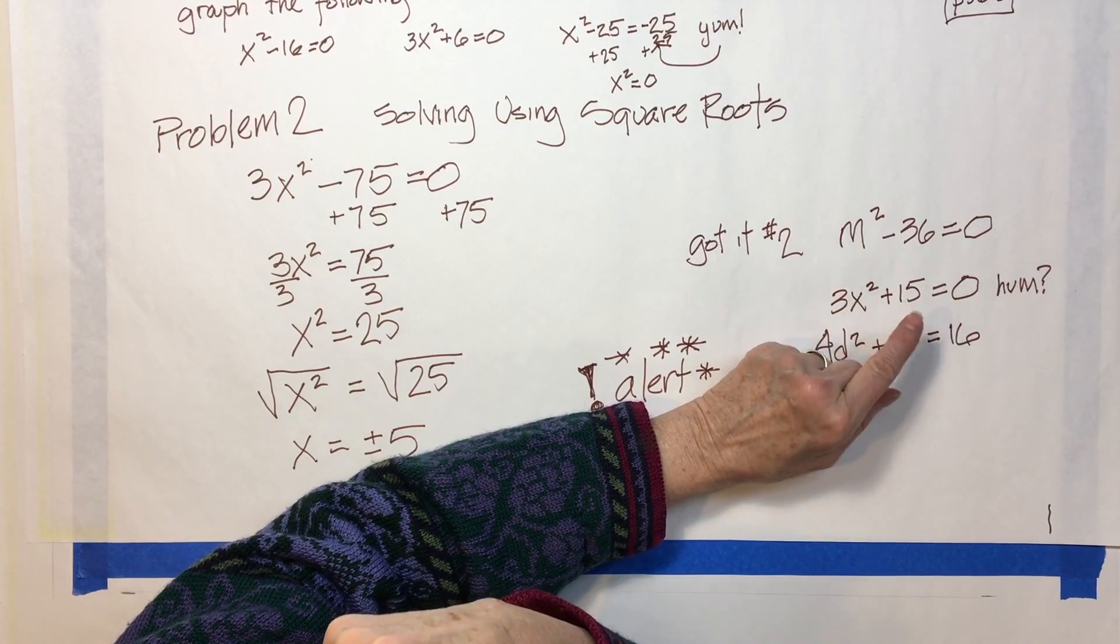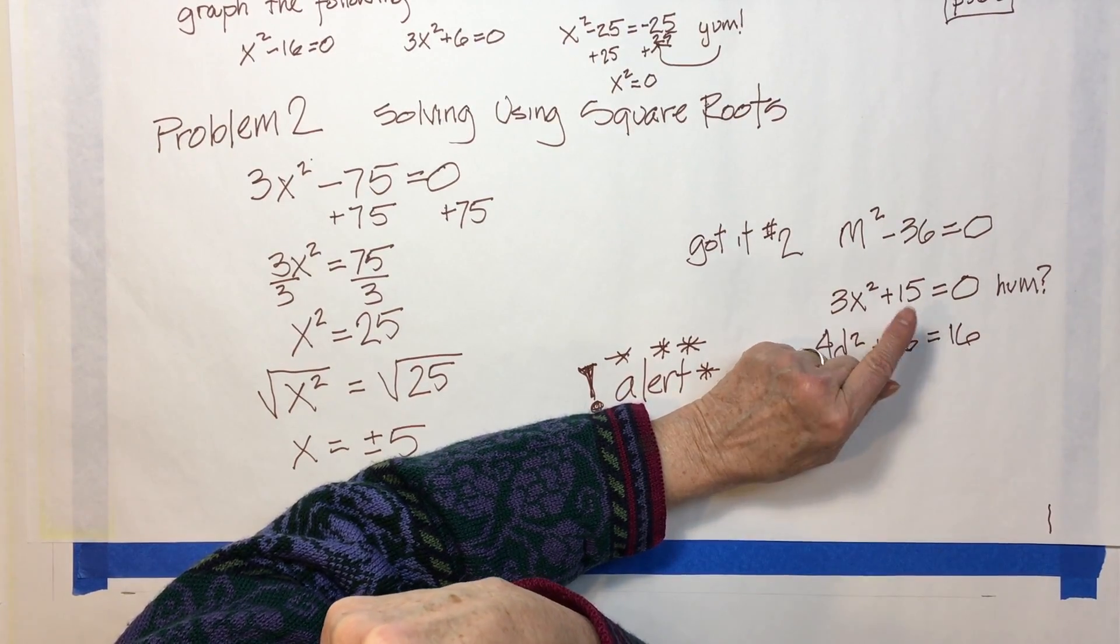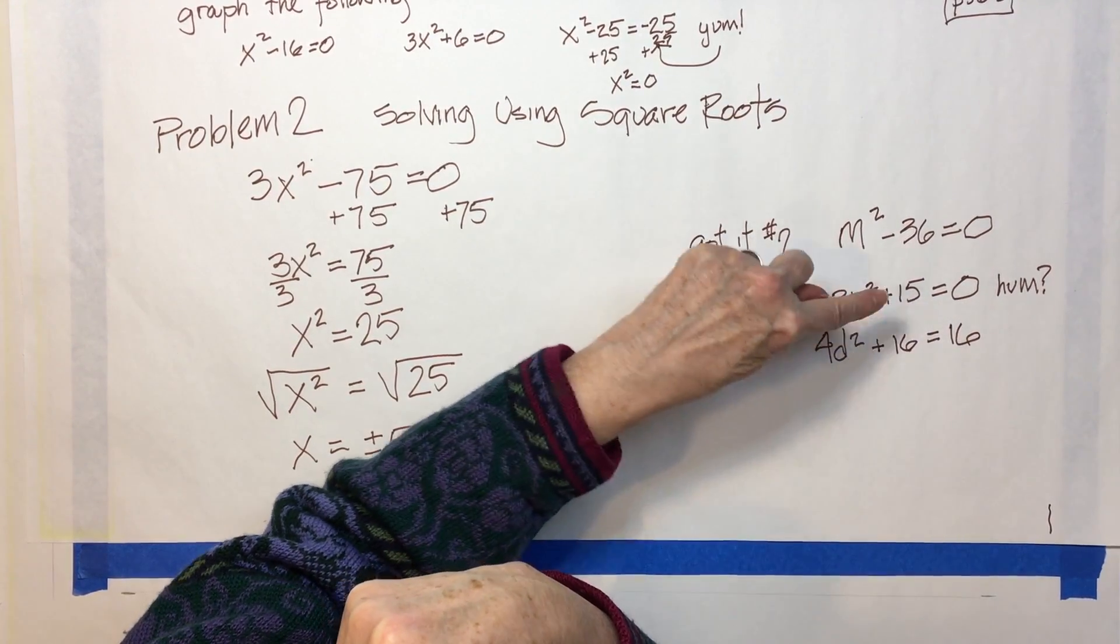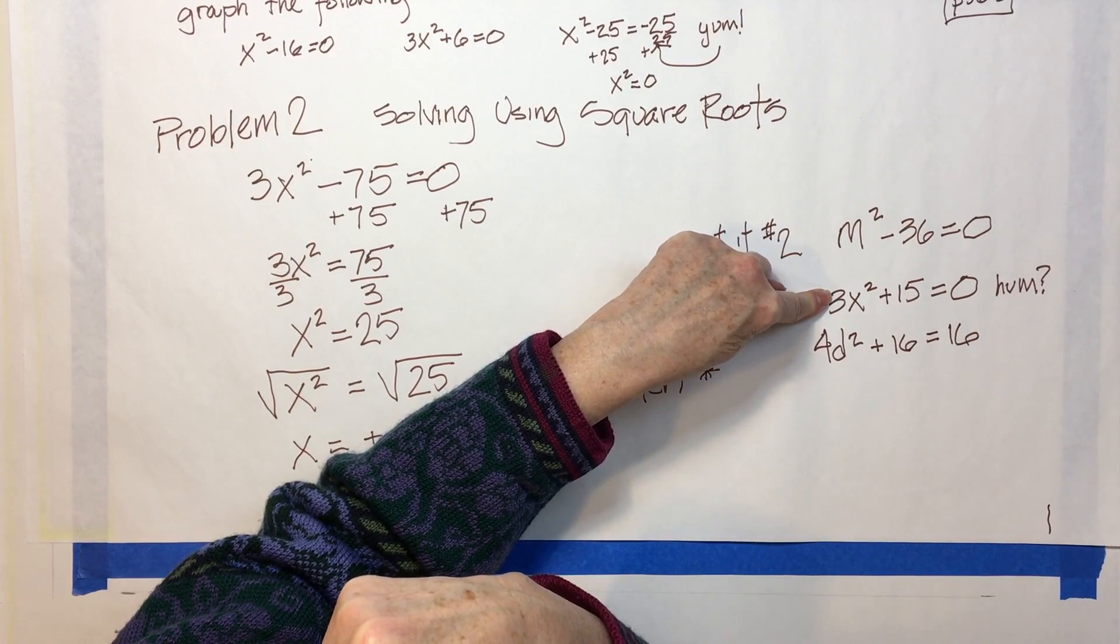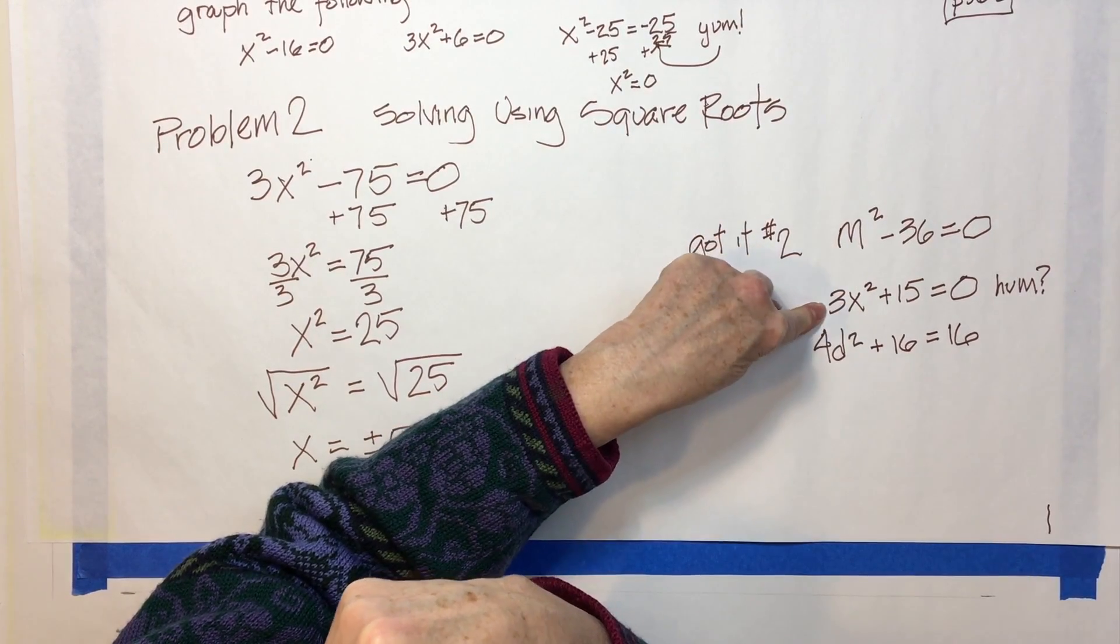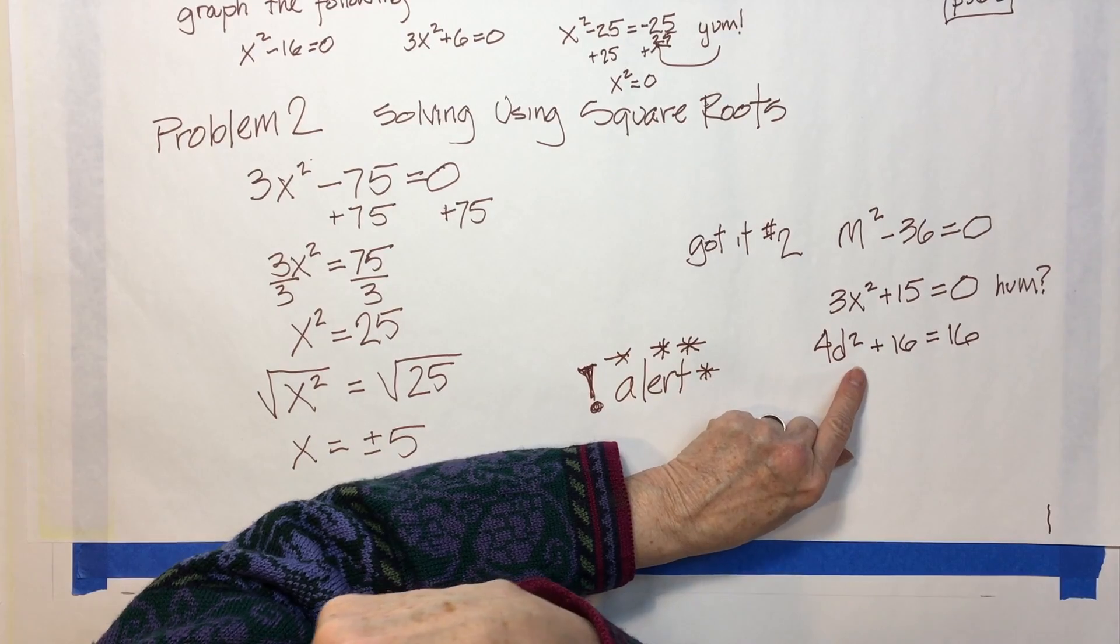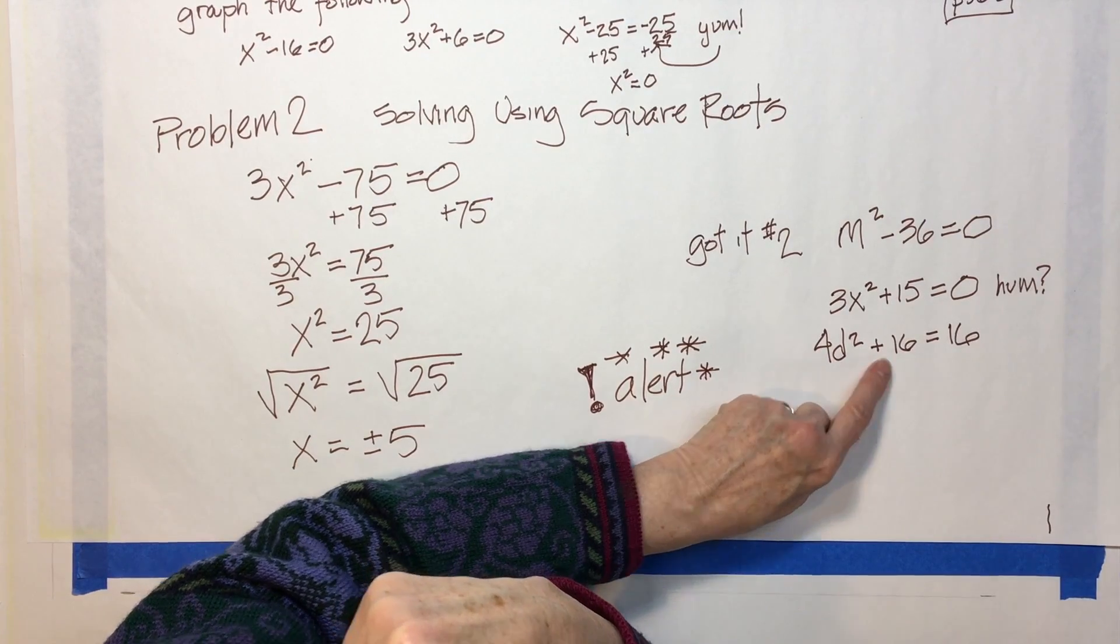Remember that always. Over here you can move that over and you've got 4d squared equals 0. You're okay with that.